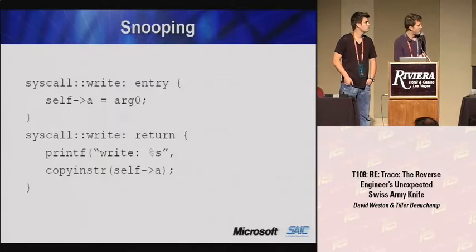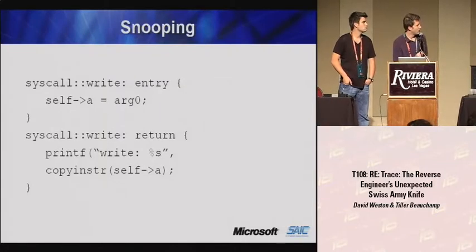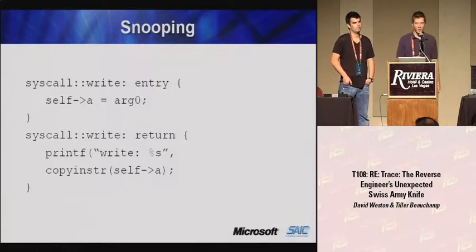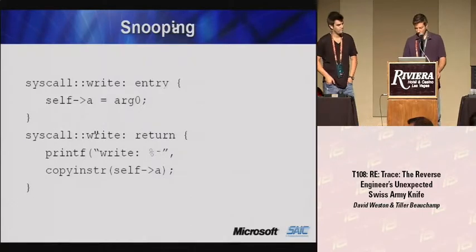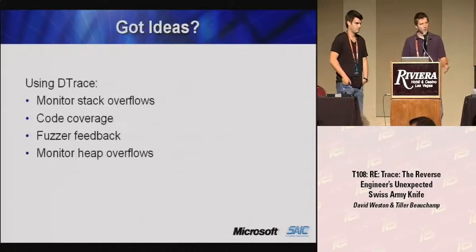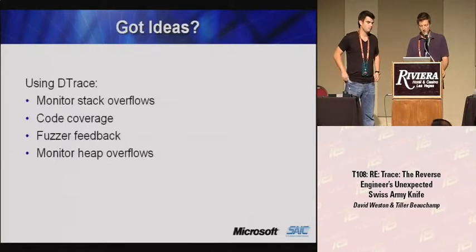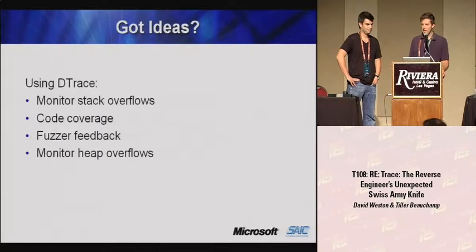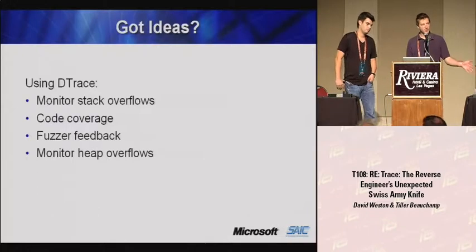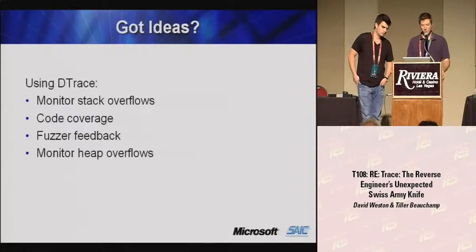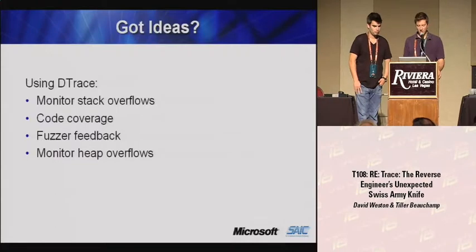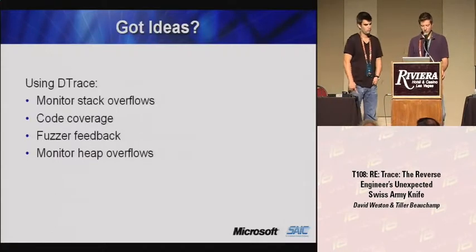Here's a small example showing file process snooping. We hook the write entry point and write return point, record the buffer, and print it out when the function returns. This allows you to sniff all the output from another user's terminal or any other application. We're also thinking about monitoring the stack, doing code coverage metrics, using those metrics to automate feedback to the fuzzer to adjust inputs, and monitoring for heap corruptions.